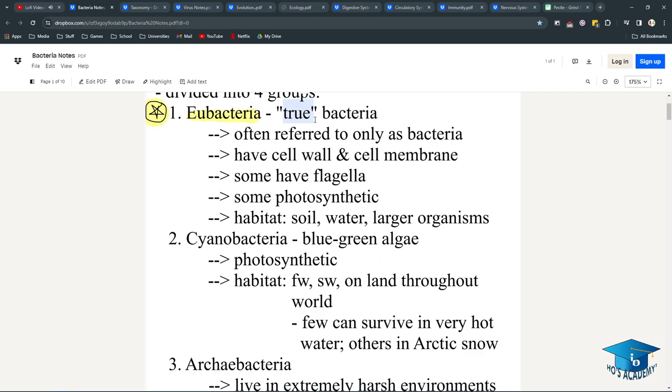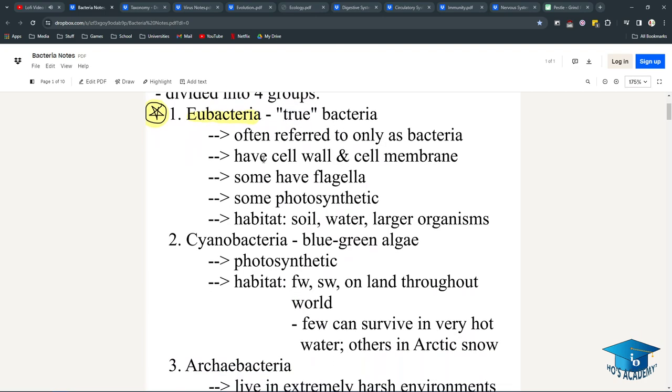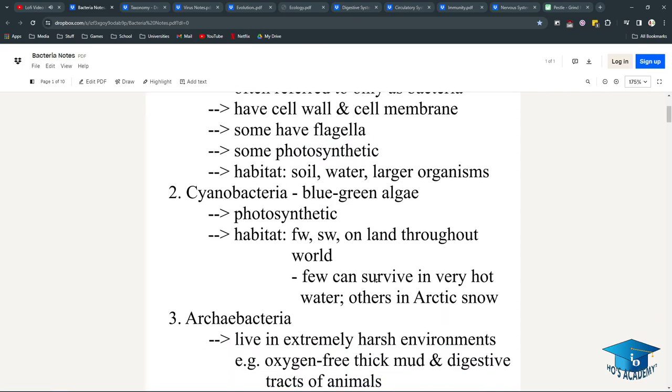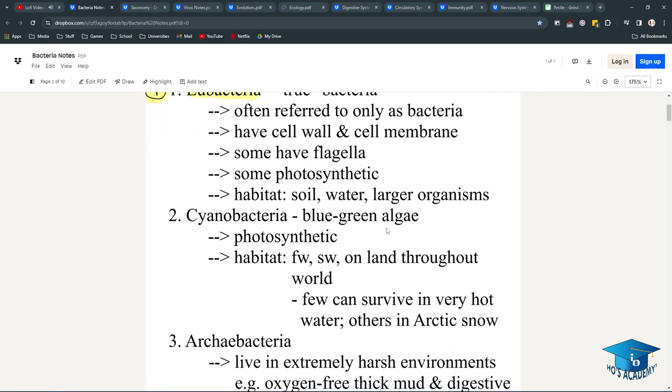Eubacteria, or true bacteria, are the ones we hear about most, like E. coli. They have cell walls, cell membranes, and some have flagella. Some are photosynthetic, which means they don't need food and instead just use light and carbon dioxide. They live in soil, water, and inside larger organisms such as E. coli living in our digestive tract.